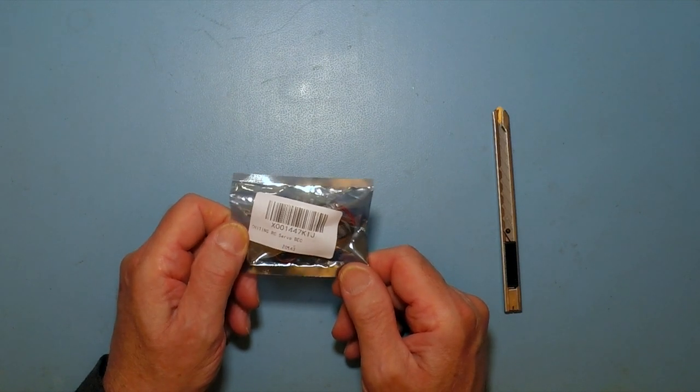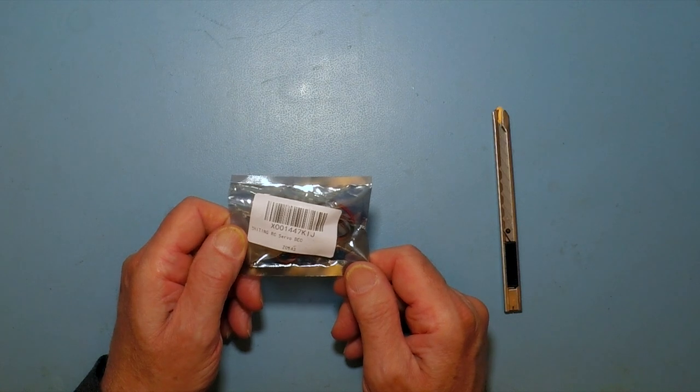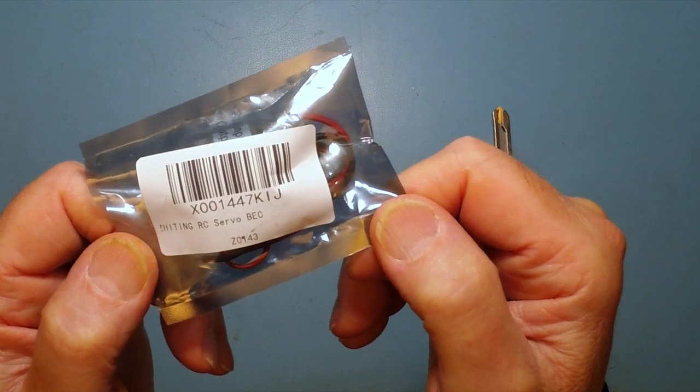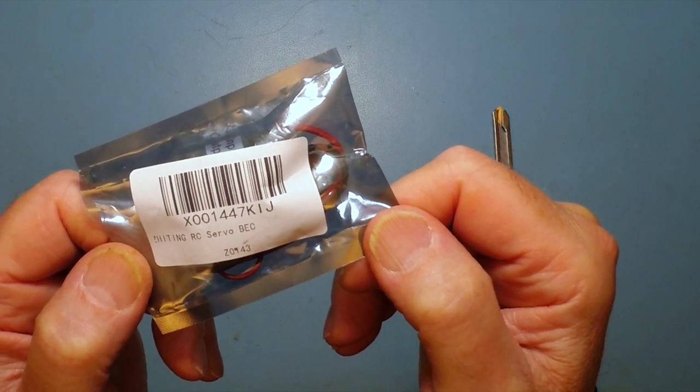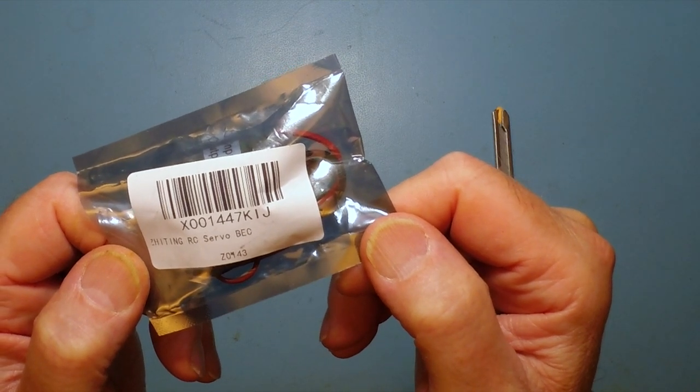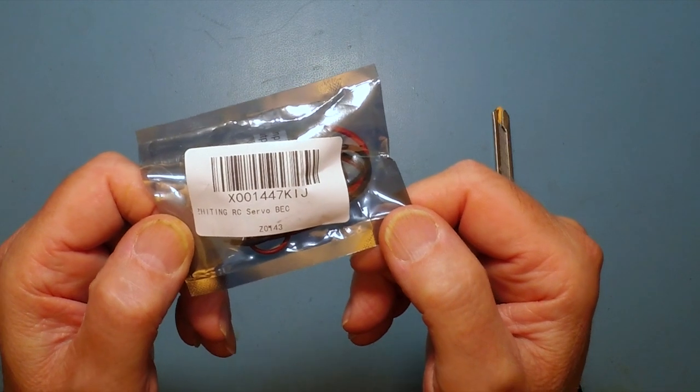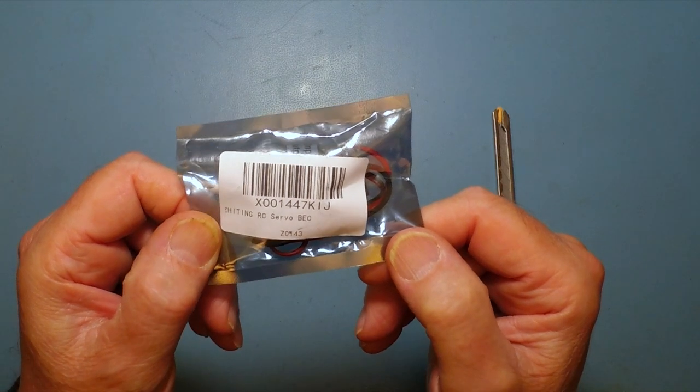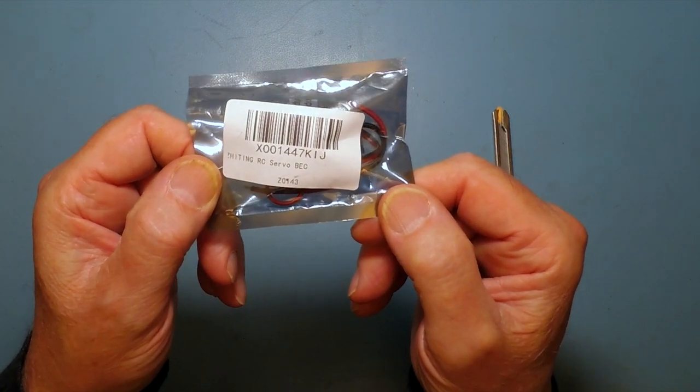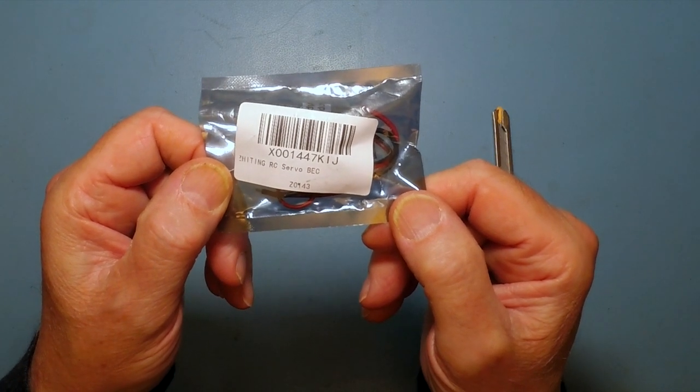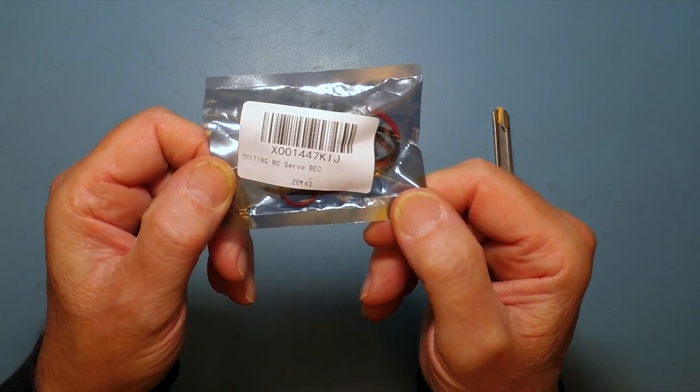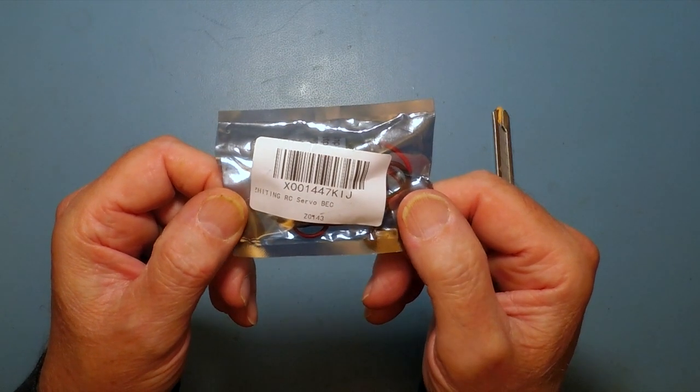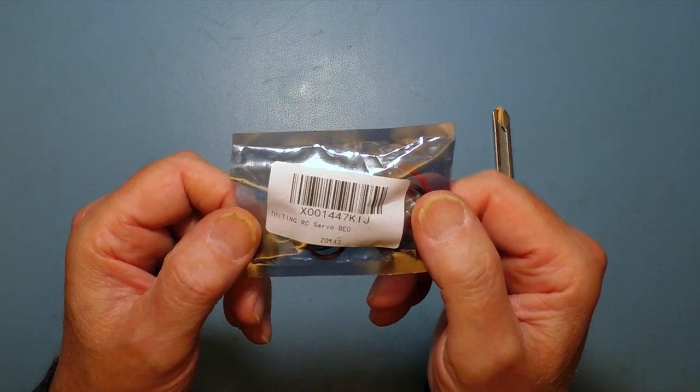And the one I'm holding in my hand, the Zeitung RC Servo Beck, as it's called, this fellow here, the serial number X001447kij, is really intended for radio controlled helicopters. They apparently need 5 volts from the battery supply, and often a LiPo, a lithium polymer battery, and if it's a 4s or 3s battery, it could be anything from 11 point something to 16 point something volts to get down to 5 volts, maybe to run the servos on the helicopter.